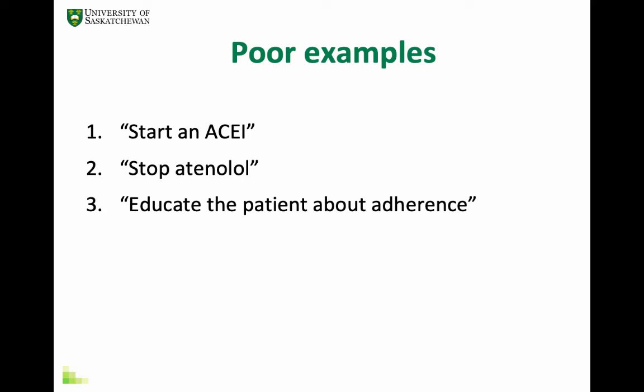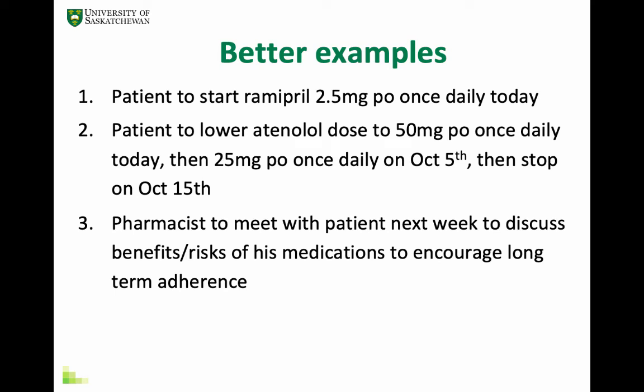Here are some poor versus better recommendation examples. Poor: 'Start an ACE inhibitor' — not specific enough. Better: 'Start ramipril 2.5 mg once daily today.' Poor: 'Stop atenolol' — you need to specify when and how quickly. Better: 'Lower atenolol to 50 mg orally once daily today, then 25 mg once daily on October 5th, then stop completely on October 15th.' Poor: 'Educate the patient about adherence' — it's not clear who provides the education or when. Better: 'The pharmacist will meet with the patient next week to discuss the benefits and risks of his medications to encourage long-term adherence.'